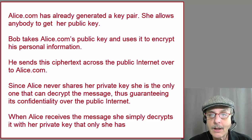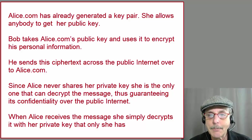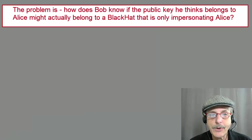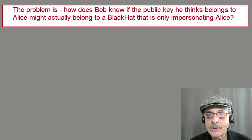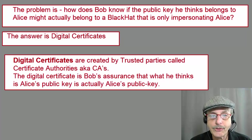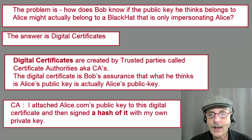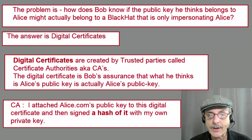It sounds like a pretty good system, right? And the math that makes this whole key pair idea work is an incredible accomplishment. But there's still a problem that should be keeping Bob up at night. The problem is, how does Bob know if the public key that he thinks belonged to Alice might actually belong to some black hat or a bad guy that's only impersonating Alice? The answer is digital certificates. Digital certificates are created by trusted parties called certificate authorities, or CAs. The digital certificate is Bob's assurance that what he thinks is Alice's public key is actually Alice's public key. The CA is saying something like this: I attached Alice.com's public key to this digital certificate and then signed a hash of it with my own private key.